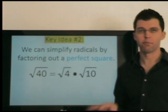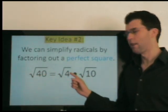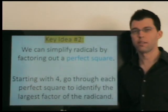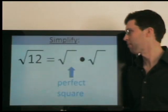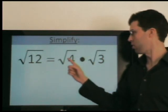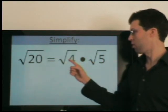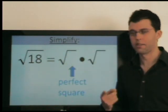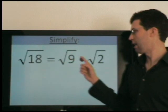The second key idea is that we're not just factoring randomly — we're factoring out a perfect square. For example, 4 is a perfect square factor of 40, so radical 4 can be simplified, and radical 40 equals 2 times radical 10. We go through all the perfect squares starting with 4 and determine the largest possible perfect square factor. So for radical 12, 4 times 3 gives 2 times radical 3. For radical 20, 4 times 5 gives 2 times radical 5. For radical 18, 4 is not a factor but 9 is, so 9 times 2 gives 3 times radical 2. For radical 125, 25 is the largest perfect square factor, so 25 times 5 gives 5 times radical 5.